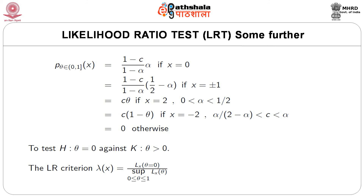Similarly, we define the PMF of X for all theta belonging to the open interval (0,1]. This PMF equals (1-c)/(1-alpha) times alpha if x=±1, equals c*theta if x=2, and equals c*(1-theta) if x=-2, provided 0 < alpha < 1/2 and alpha/(2-alpha) < c < alpha. The PMF equals alpha at x=0, and 0 otherwise.